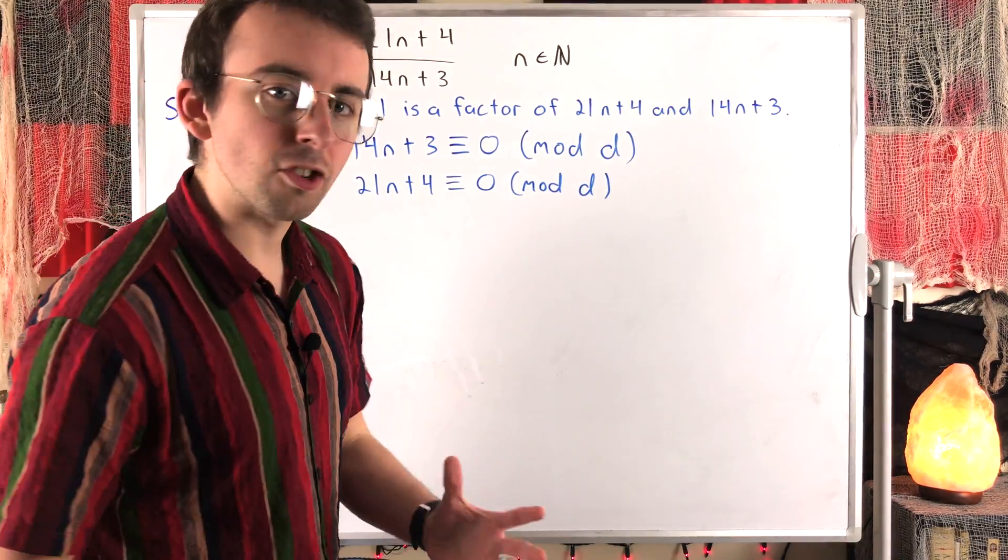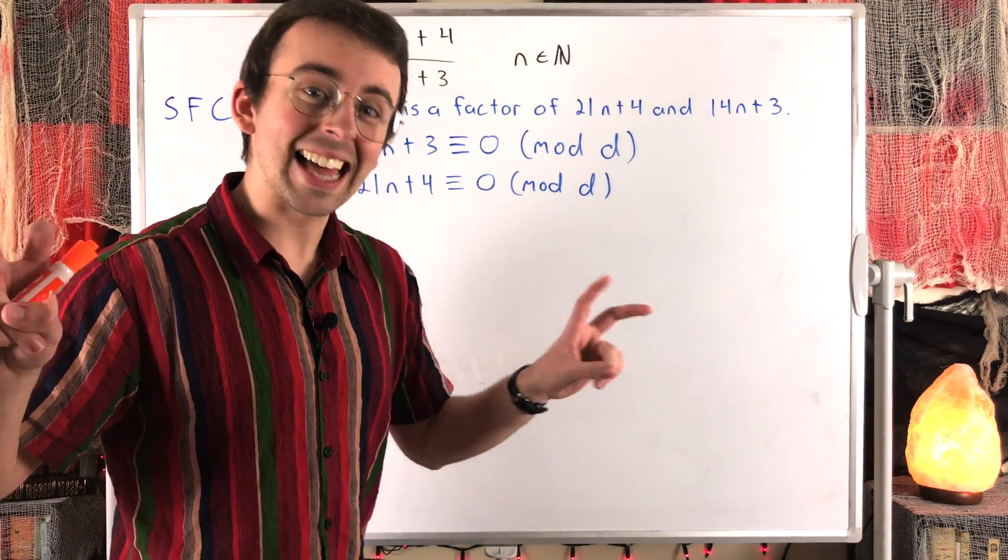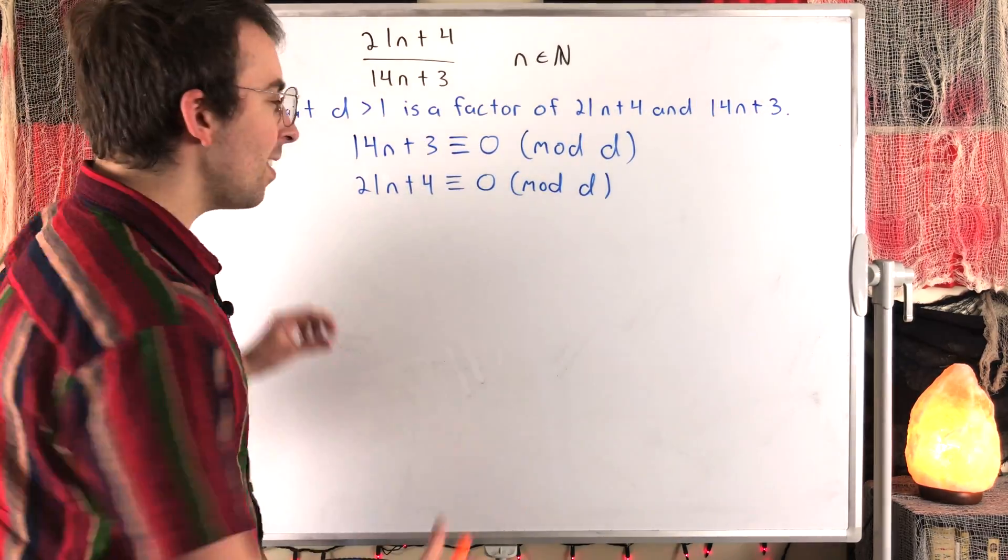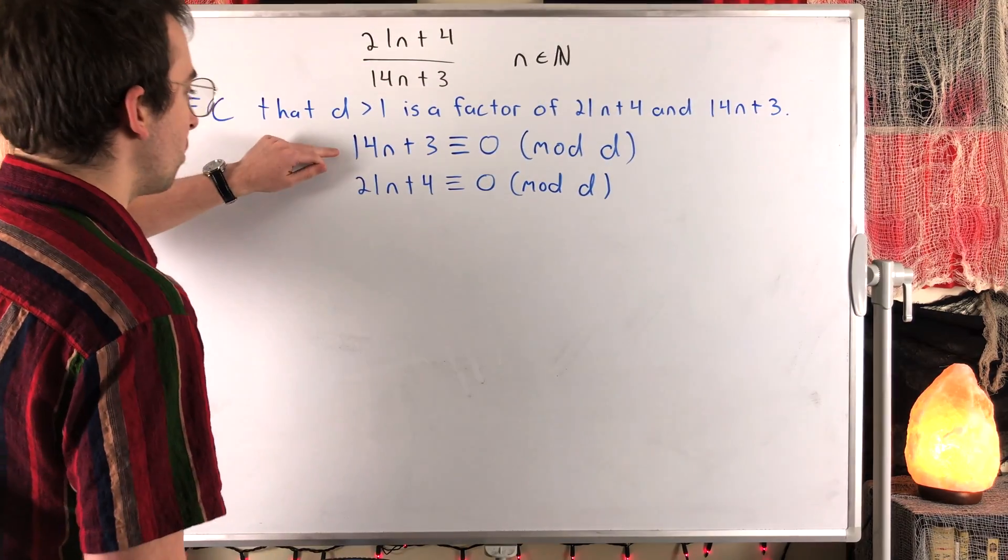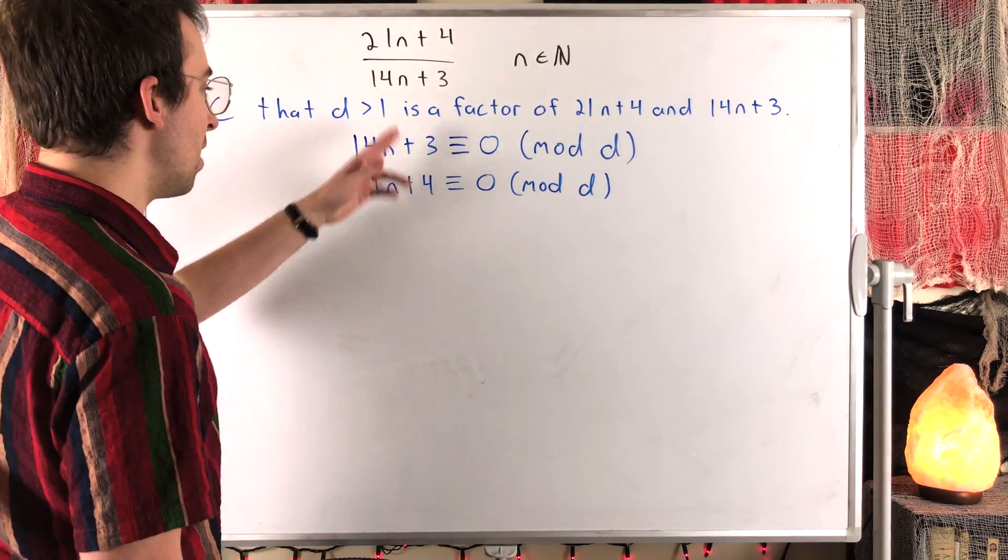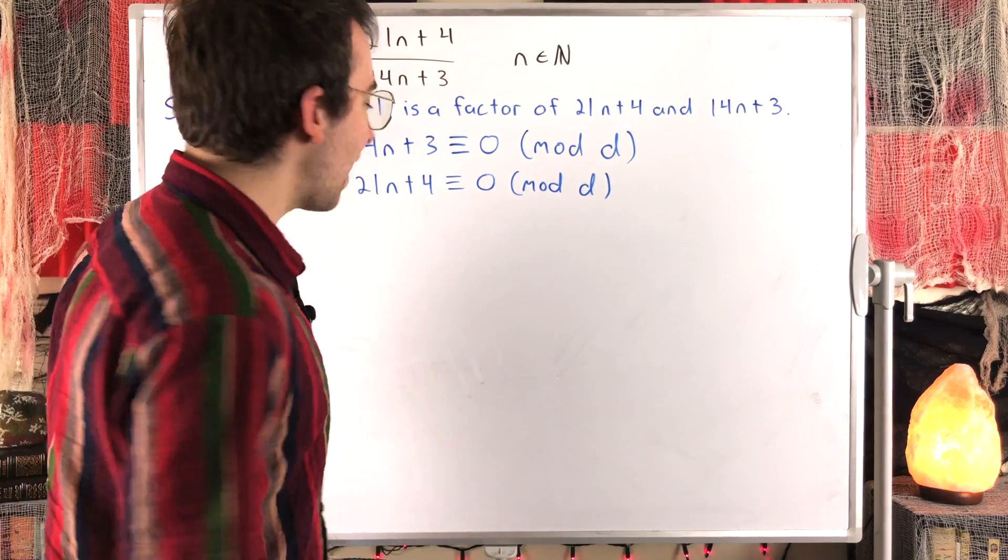Just like with normal equations, we could combine these congruences to do what's called elimination, to get rid of the variable. But right now, in this case, if we combined these congruences, what would we get? We would just get 14n plus 21n, which is 35n plus 7 is congruent to 0, and we still got the n. So that's not a big help.